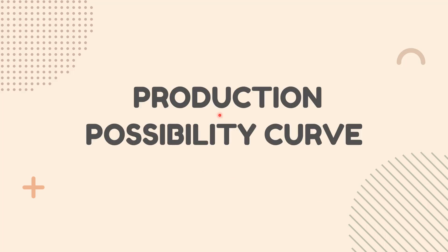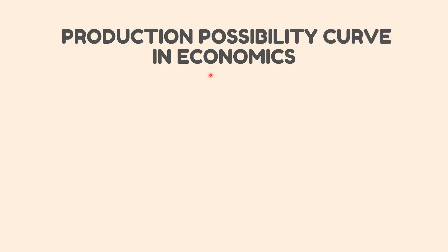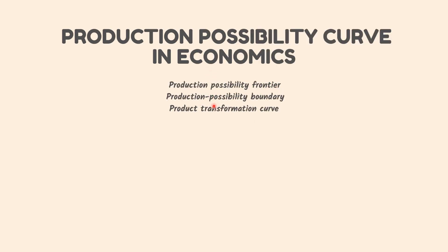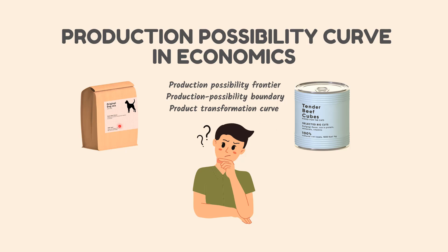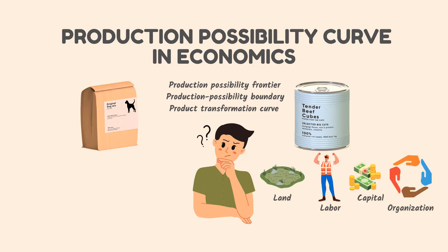Production Possibility Curve. In economics, a production possibility curve is also called a production possibility frontier, production possibility boundary, or product transformation curve. It is a graph that compares the production rates of two commodities that use the same fixed total of the factors of production, graphically bounding the production set.